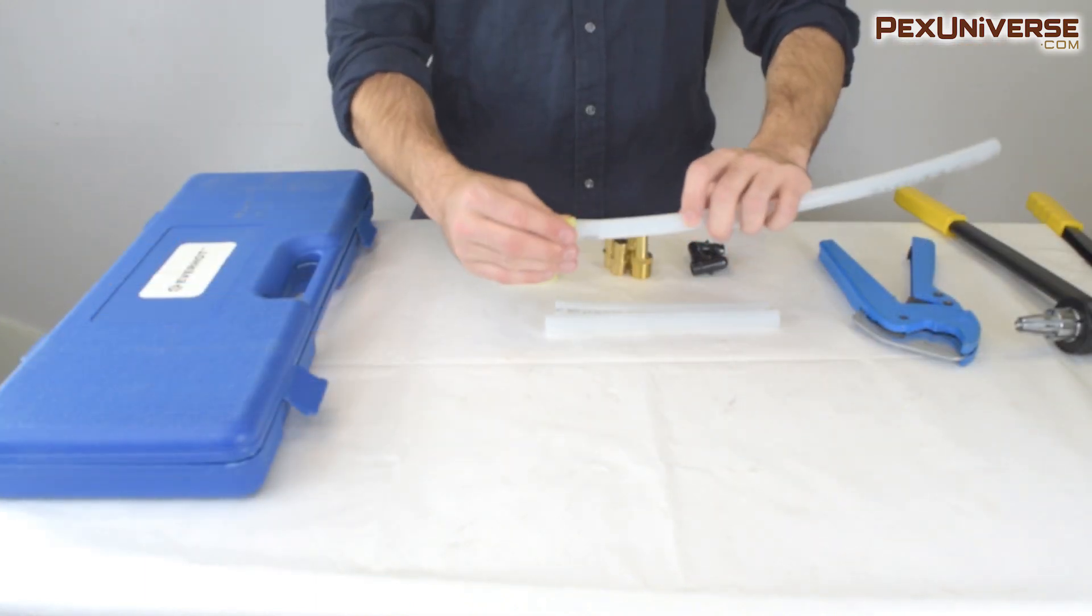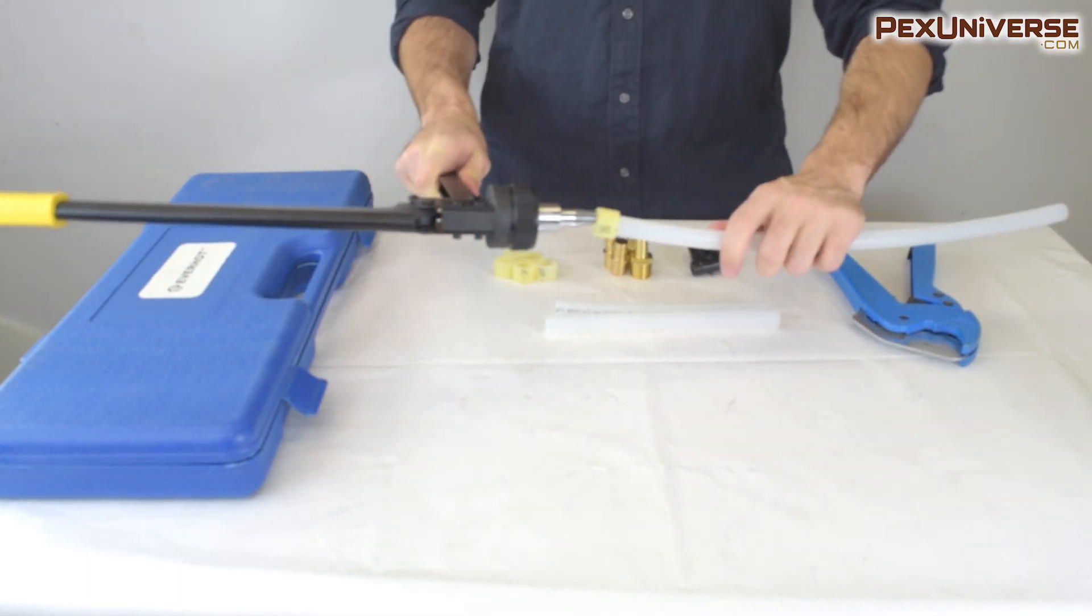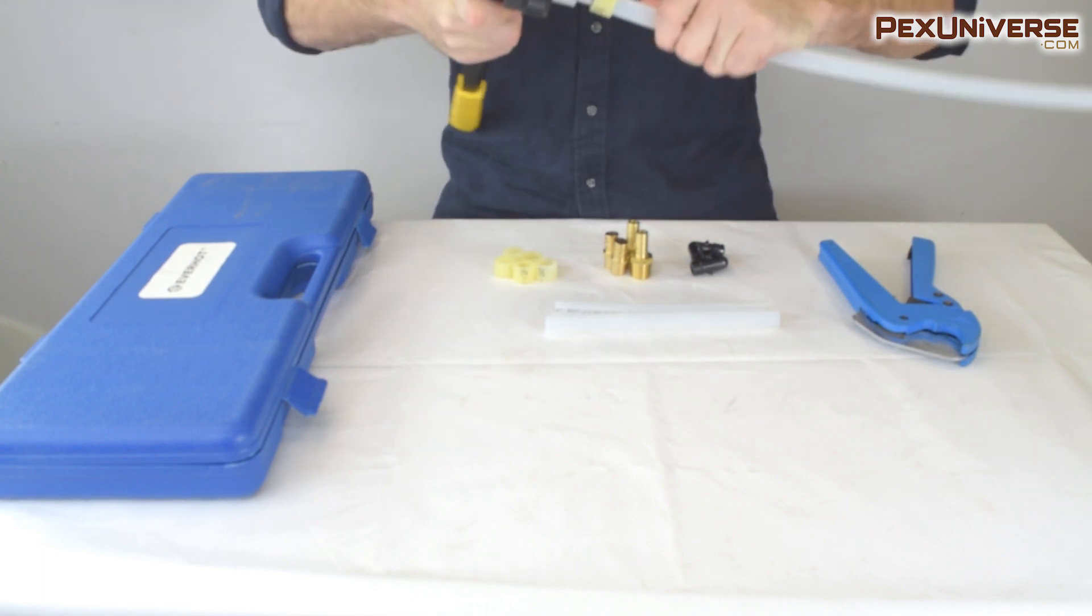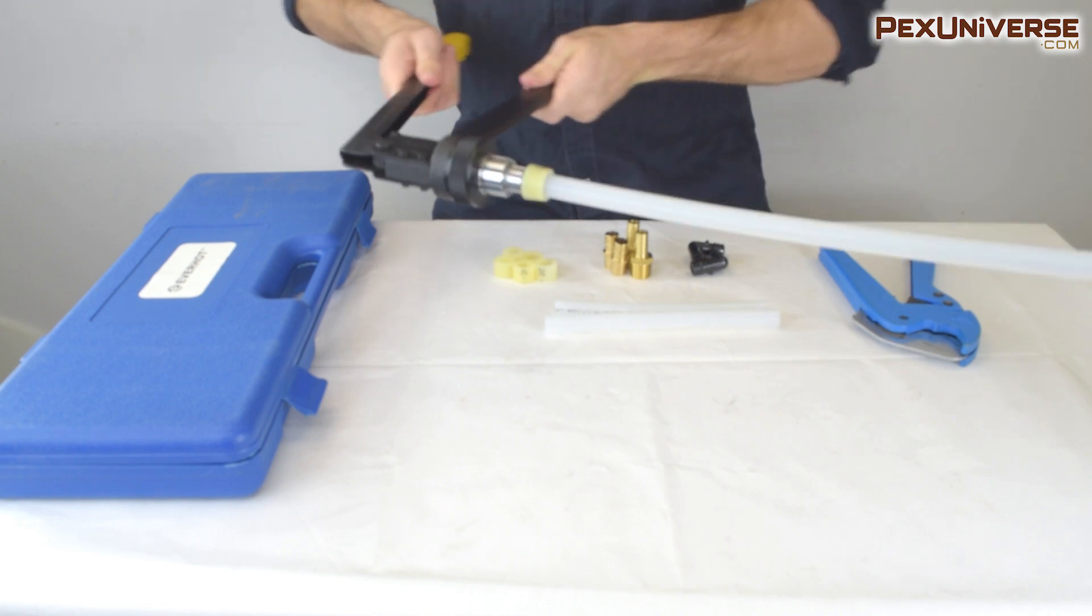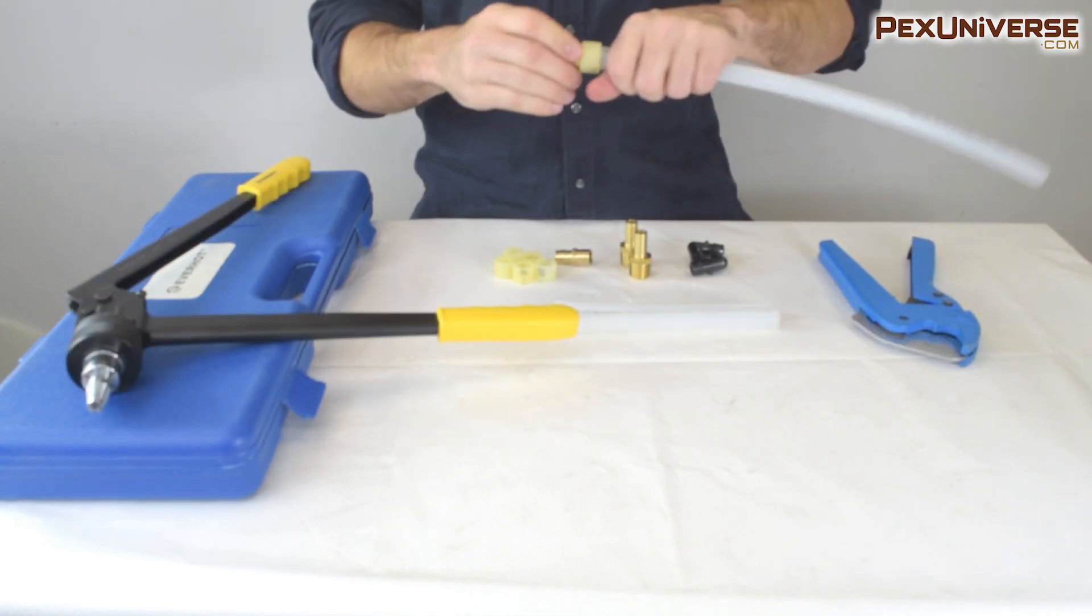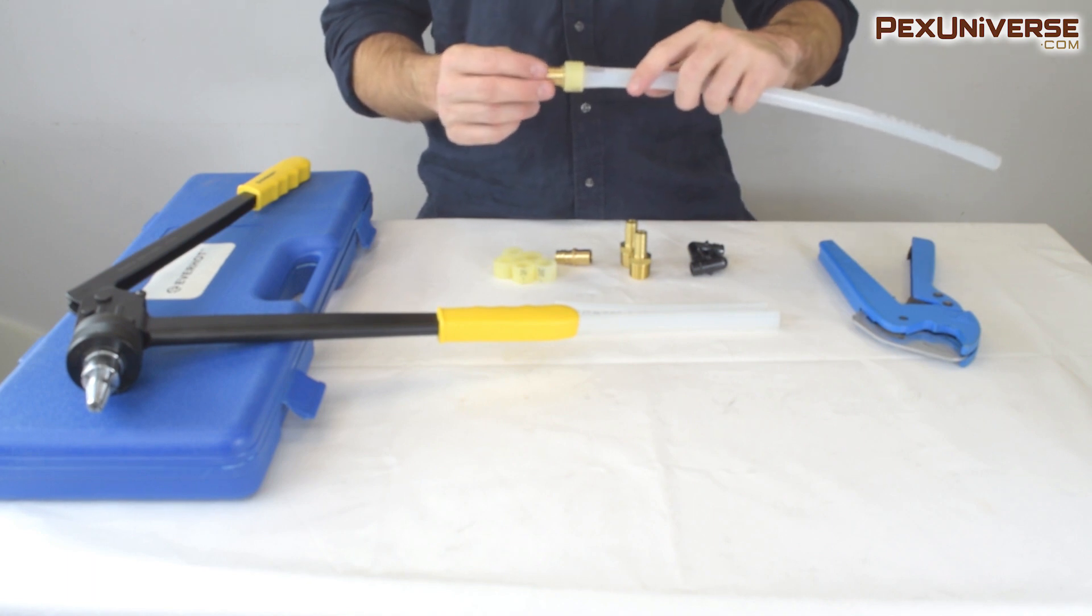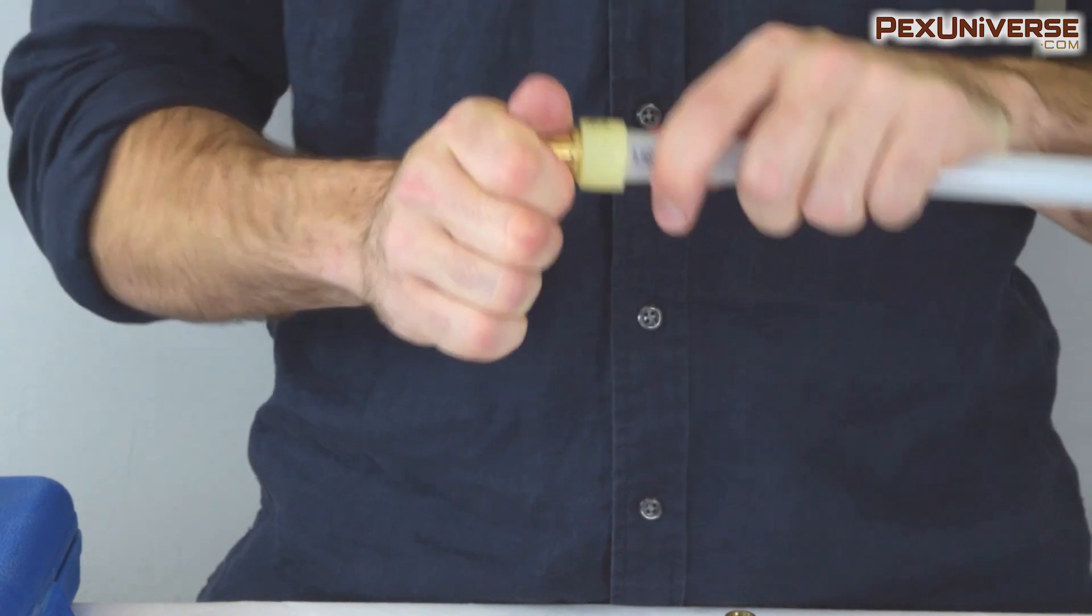You take your expander ring and place it over the tubing. This is half inch tubing so I have a half inch ring. Make sure you get the right head size of the tool and insert it. Expand it a few times until it's open and then insert the fitting. All you have to do after that is wait until the tubing fixes itself and secures the fitting.